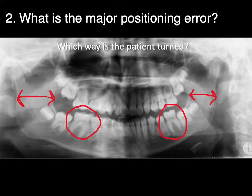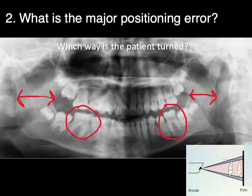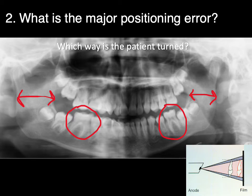So which way is the patient turned? Because if we're going to correct the error, we need to know where the problem is. This has to do with magnification — the machines are calibrated such that the teeth should be a certain distance from the film. If you get too close to the film, you actually get less magnification. So the side turned towards the film will be smaller. You get more magnification if you're turned away from the film. Just like shadow casting — the further away you get from the wall, the larger your shadow will be. So the side further away from the film will be magnified.